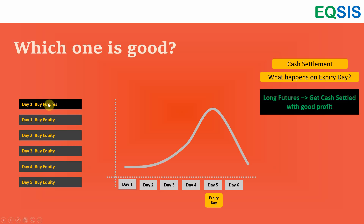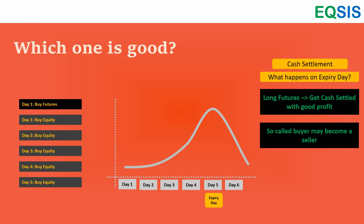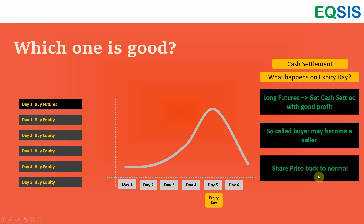Because of the long futures position, the strong hand receives a large cash profit. They are not given shares, just the cash balance. Then this so-called buyer becomes a seller. Since they accumulated shares over five days specifically to inflate the price, they start supplying those shares the next day, and the price comes crashing down. They aggressively pushed the price up to collect cash settlement profit, then equally pushed it down by selling. Post expiry the price returns to normal, but the strong hand already made profit on the futures.